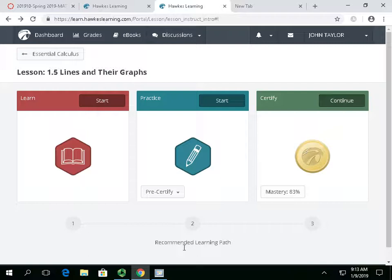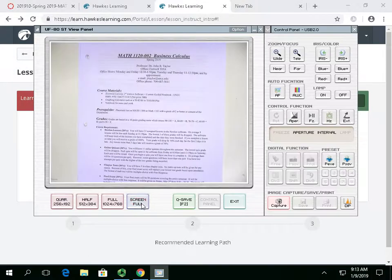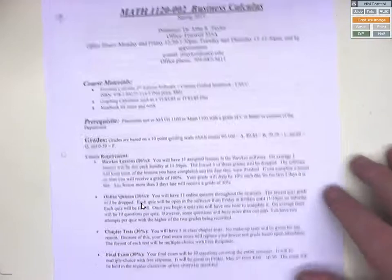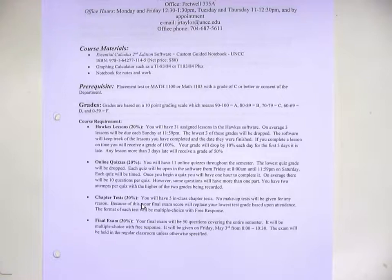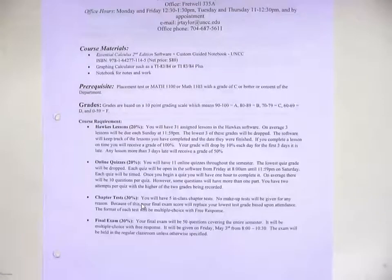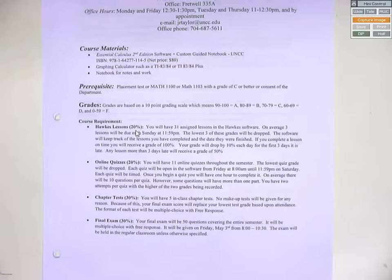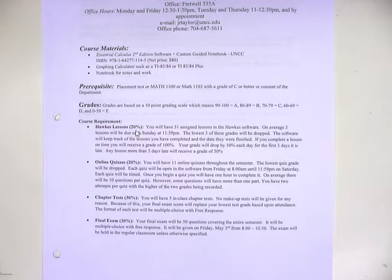Let me go back to the syllabus. The prerequisite for the class is Math 1100 or Math 1103, which is college algebra or pre-calculus, and you had to have a C or better to get in. We're on a 10-point grading scale because we're college. The HALC lessons — every section you do has that certify — will make up 20% of your grade.